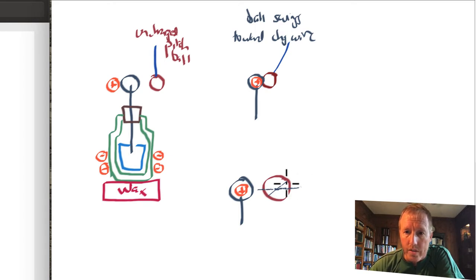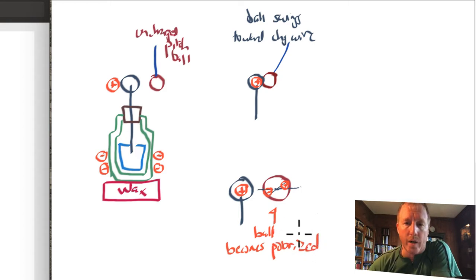So this side of the ball is going to become positively charged, and this side of the ball, where there's a deficit, becomes negatively charged. So in other words, this ball becomes polarized. This is not the terminology that Franklin uses. This is more modern terminology, but that's a way to think about what's happening here. Now, that's step one. It becomes polarized.